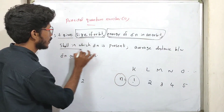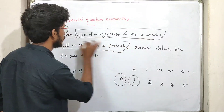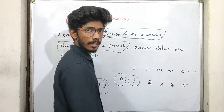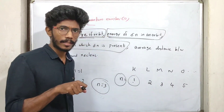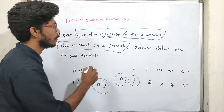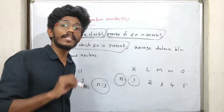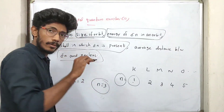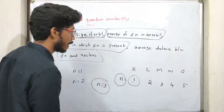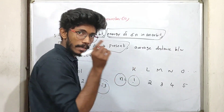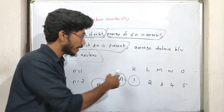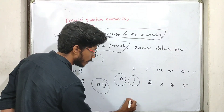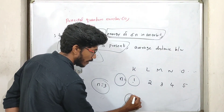The principal quantum number tells us the shell in which the electron is present. If we say n is equal to 3, then we have an electron in the M shell. It also gives the average distance between the nucleus and the electron. If we say n equals 1, then the electron is in the K shell.